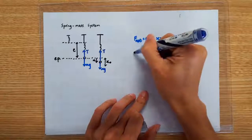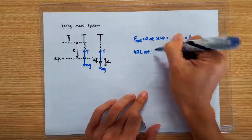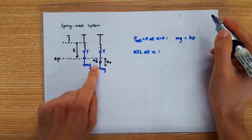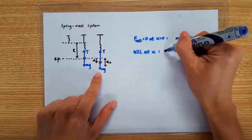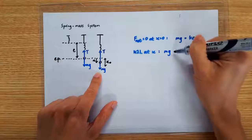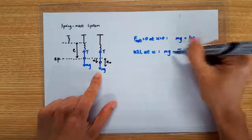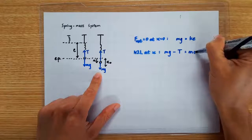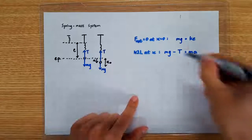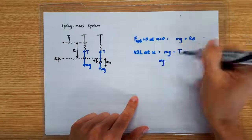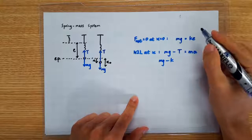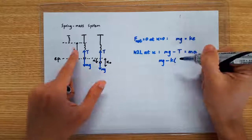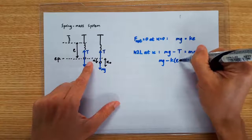So let's apply Newton's second law at a displacement of x. I'm going to take downward as my positive direction, so I take the downward weight minus the upward tension as the net force. Newton's second law says I can equate the net force to the mass times the acceleration. Next, I'm going to write T as k times the extension. Now when it's displaced downward, the extension is actually larger than E — it's exactly E plus x.